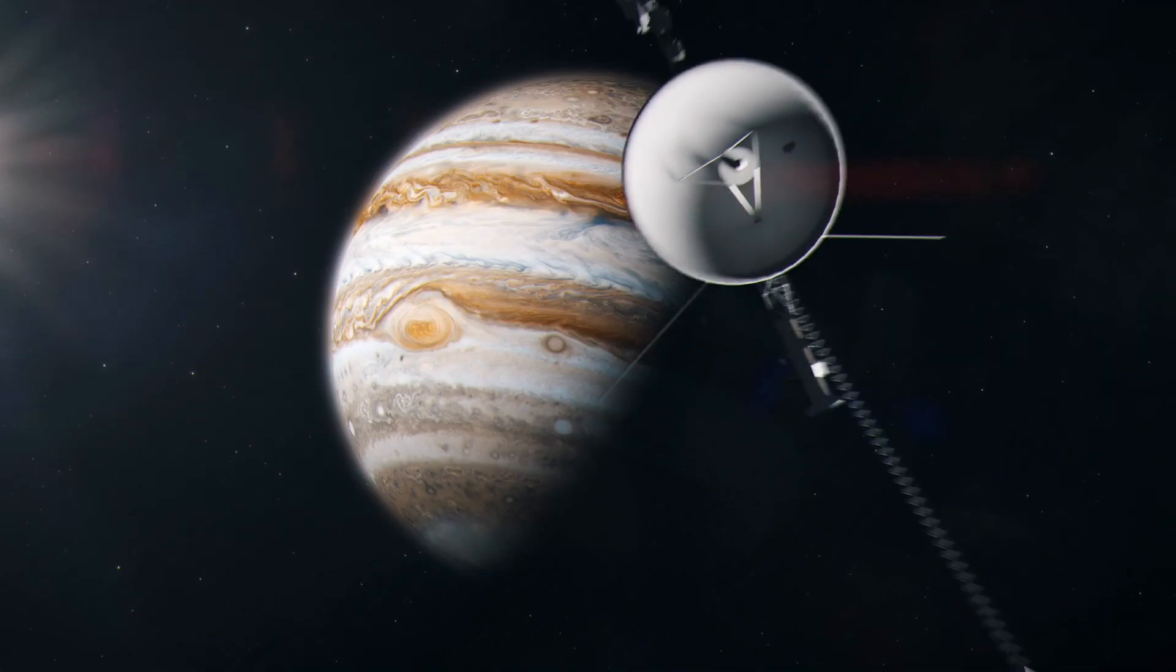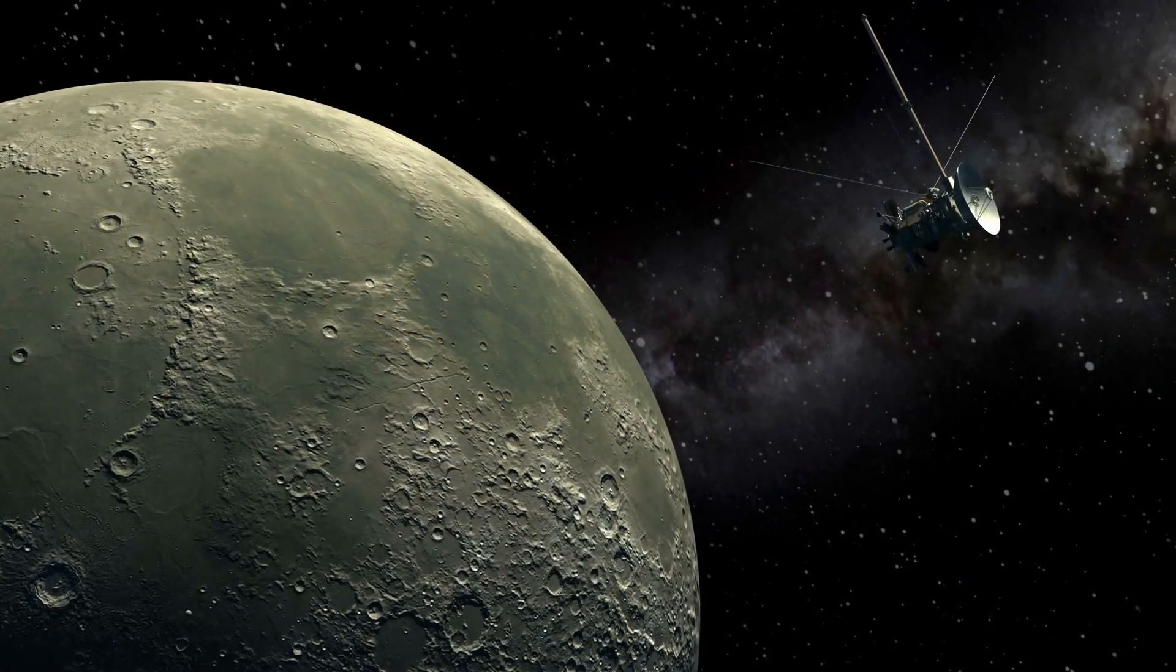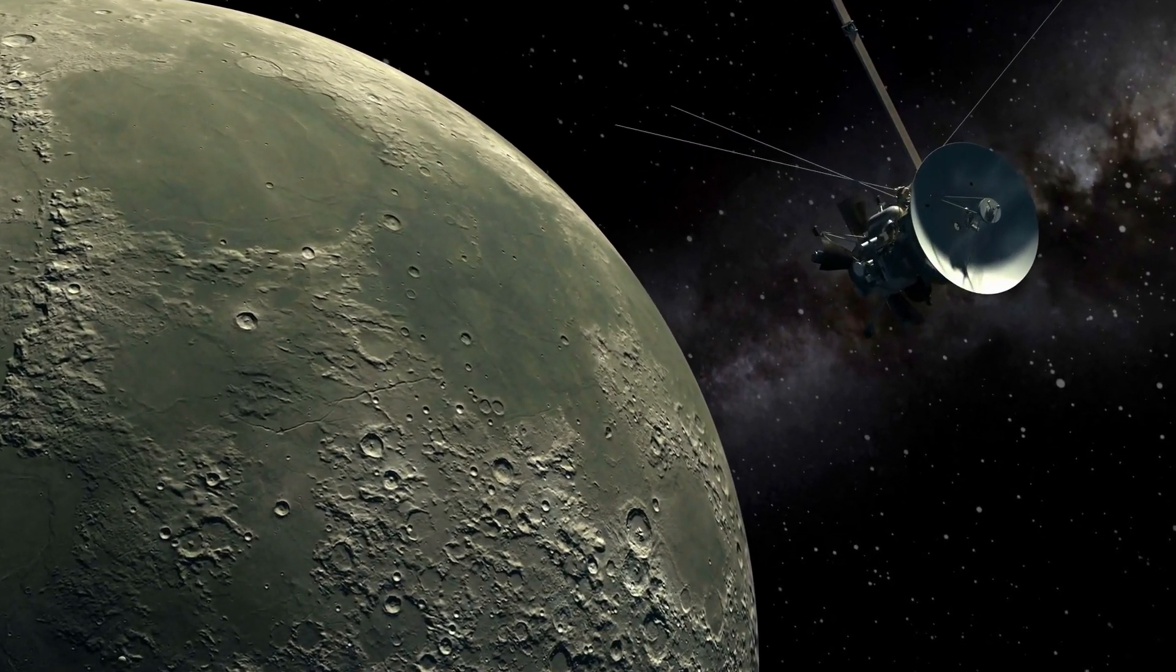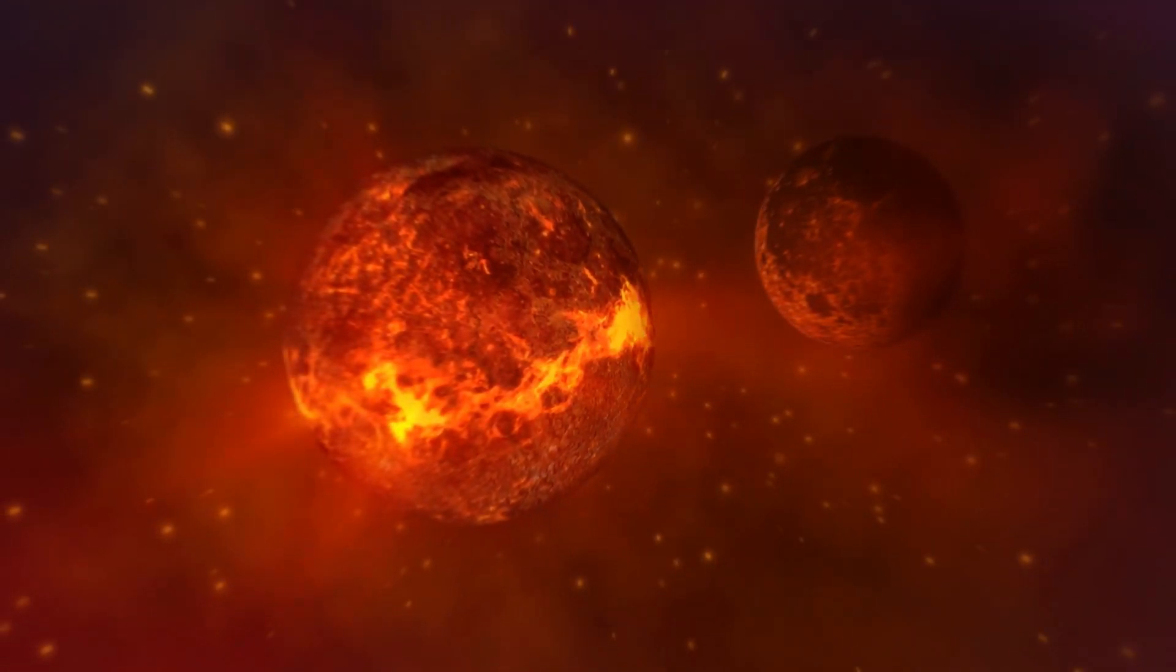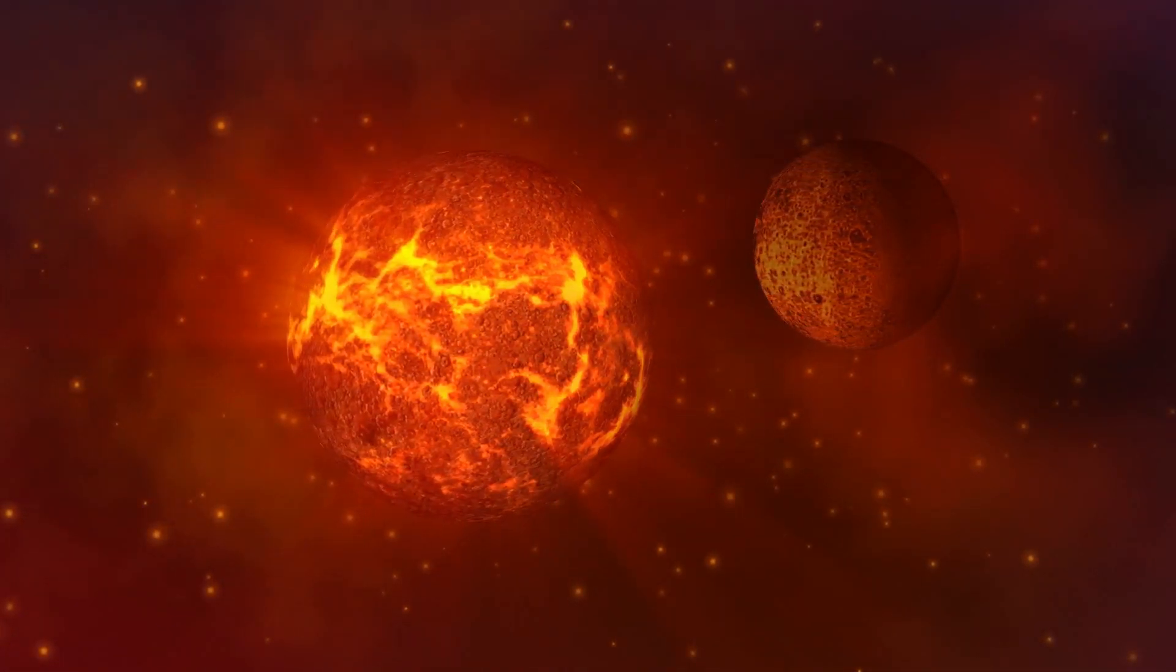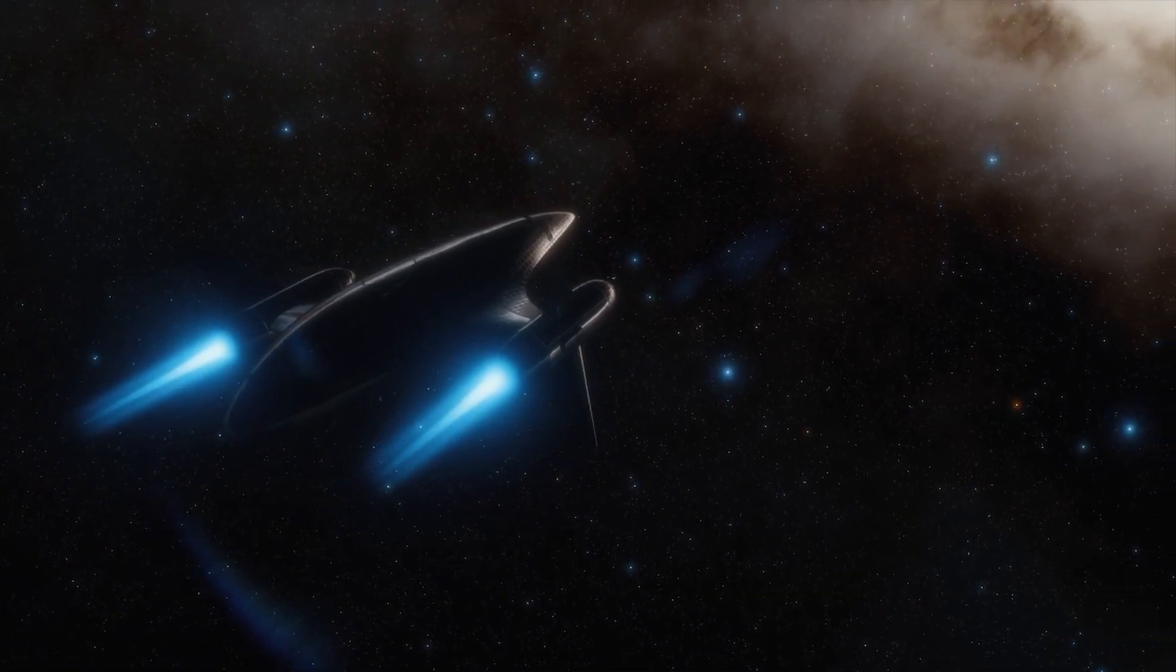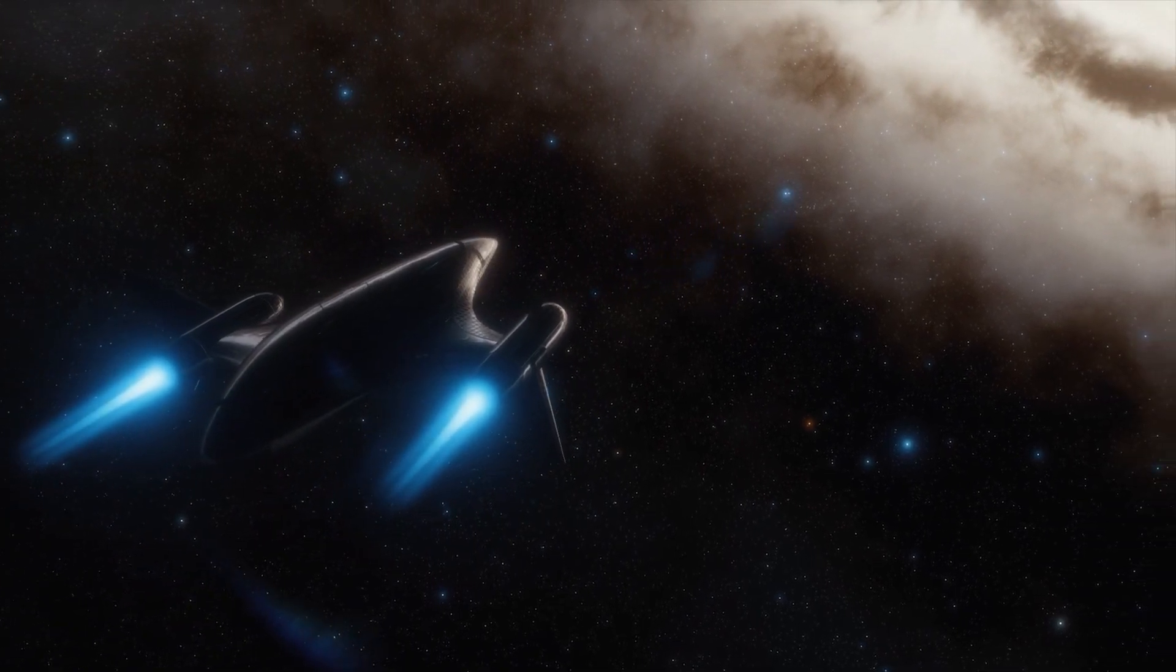While Voyager 1 went after Jupiter and Saturn, its twin, Voyager 2, was sent on a longer trip that would also go after Uranus and Neptune. This path took advantage of a rare alignment of the planets that only happens once every 176 years. This alignment let the spacecraft fly from one planet to the next, stretching their missions with little fuel use.